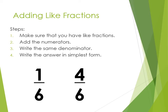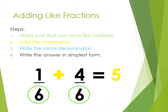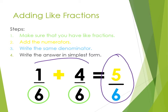You can see two fractions here. As per the steps, first make sure we have like fractions. Yes — the denominator is six for both fractions, so both are like fractions. Next, we add the numerators and we get five. After that, we write the same denominator, so the answer is five out of six. We are adding only the numerators and keeping the same denominator.